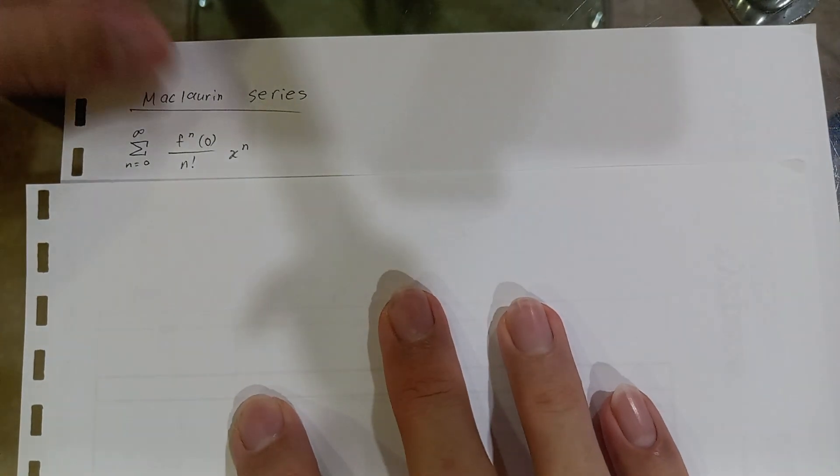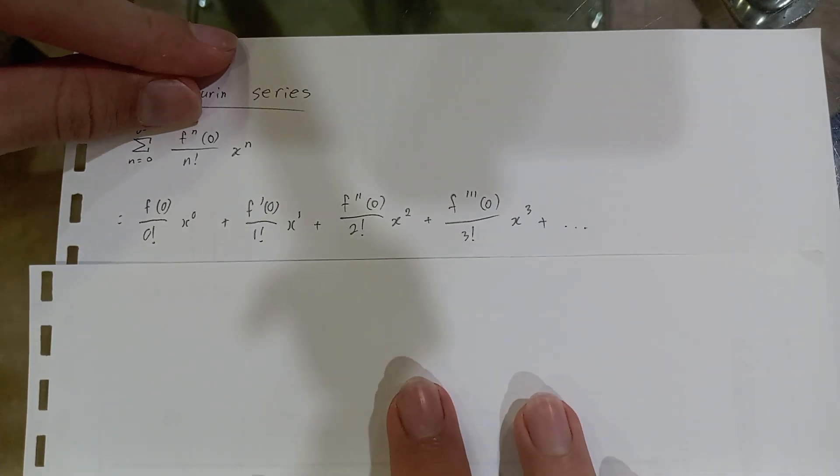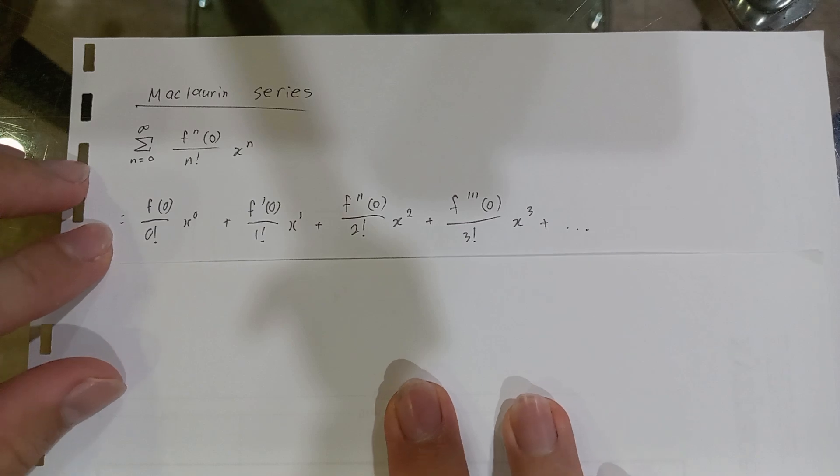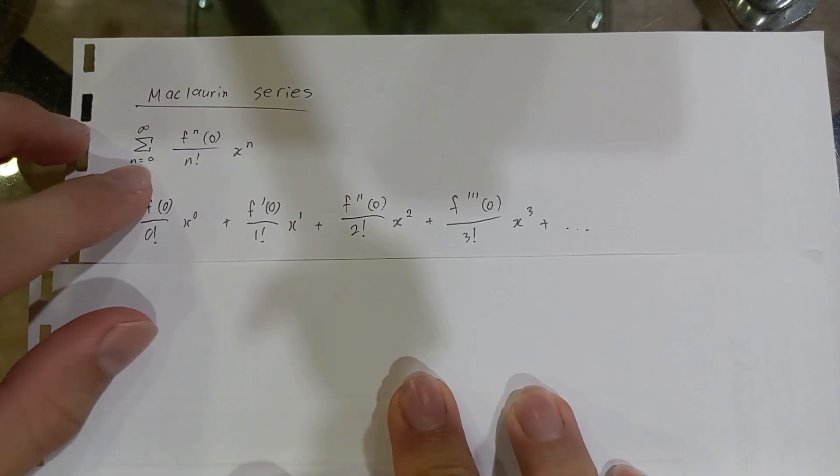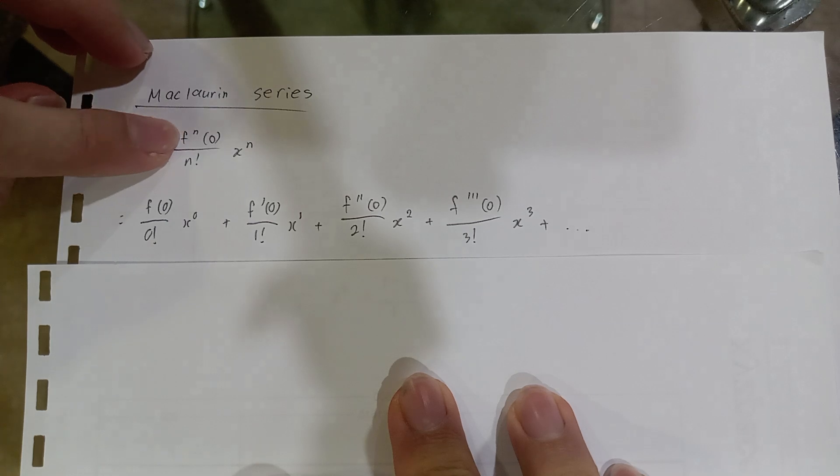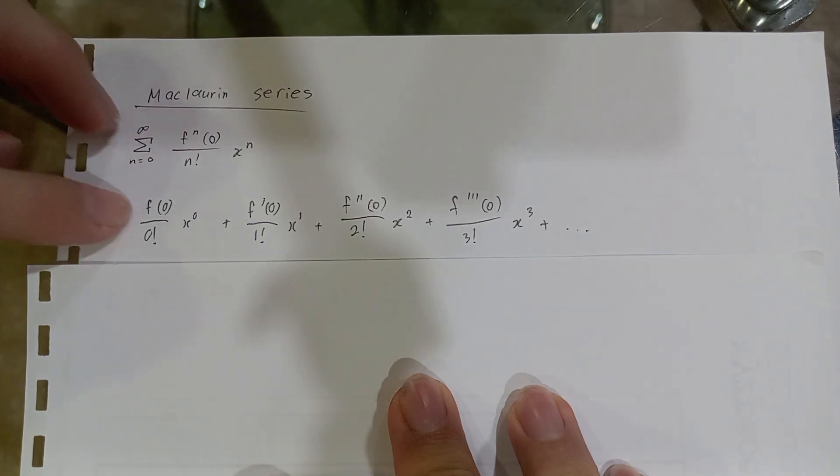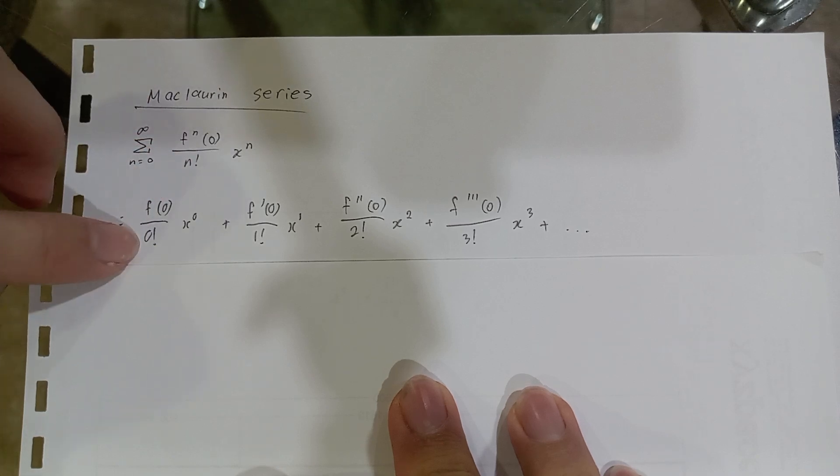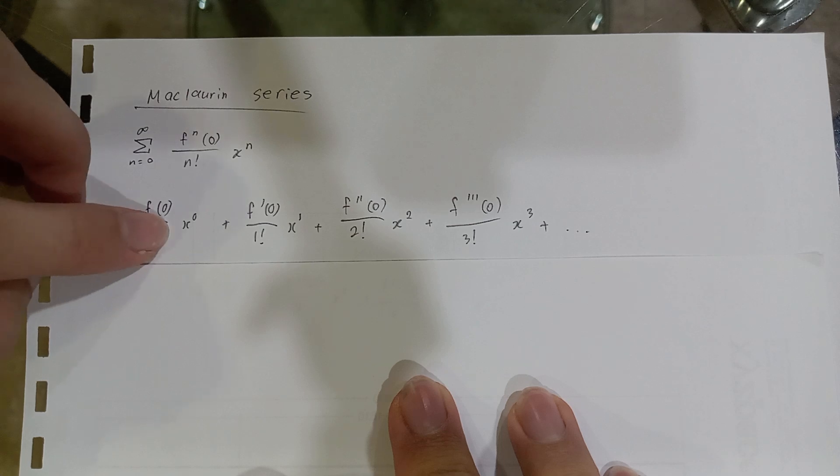Now, don't understand? Let me show you. When you open up the summation, for the first term where n equals 0, you have f and its 0th derivative at 0, divided by 0 factorial, multiplied by x to the power of 0.